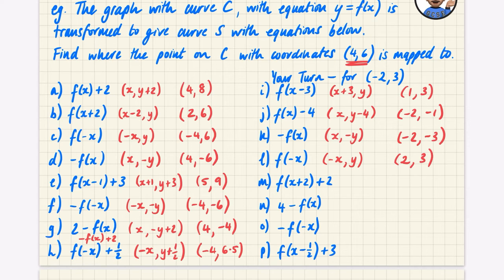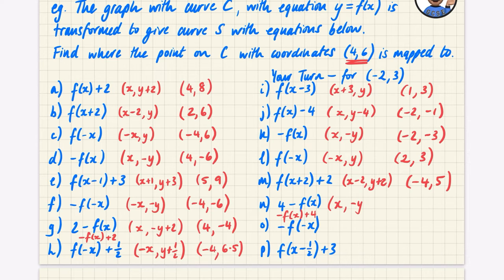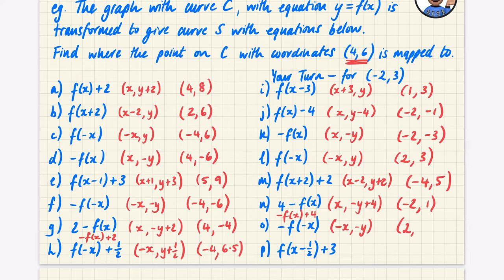For the combination transformation, y increases by 2 and x decreases by 2 — so the x coordinate goes down to -4 and the y coordinate goes up to 5. The next one is good to rewrite as -f(x) + 4: the x coordinate stays the same, you negate y (so 3 becomes -3), then add 4 to get 1. So the point maps to (-2, 1). For the double reflection, you negate both x and y, so (-2, 3) becomes (2, -3).